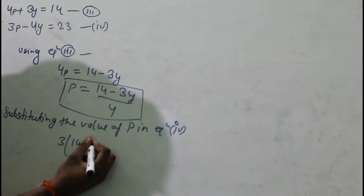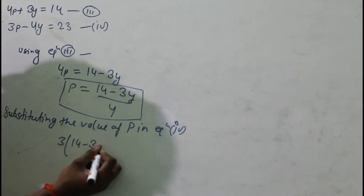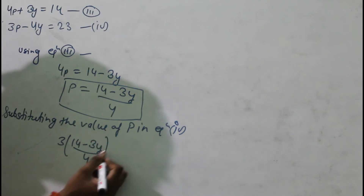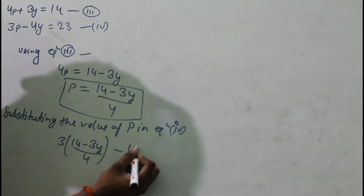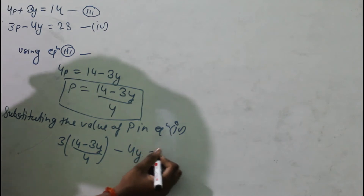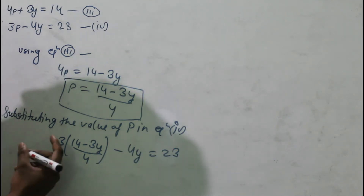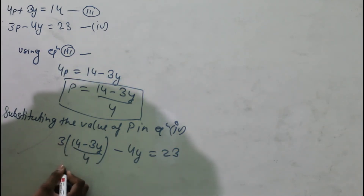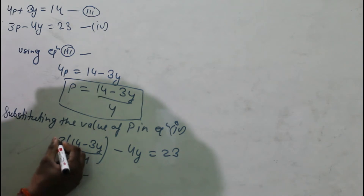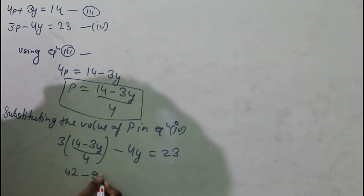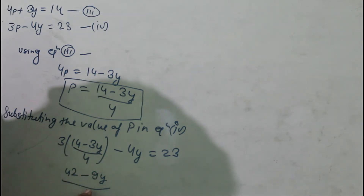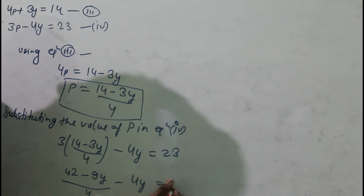Substituting p = (14 - 3y)/4 into equation four: 3 × (14 - 3y)/4 - 4y = 23, which gives (42 - 9y)/4 - 4y = 23.